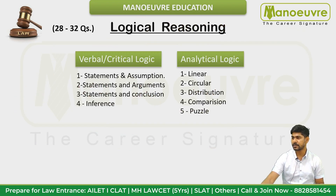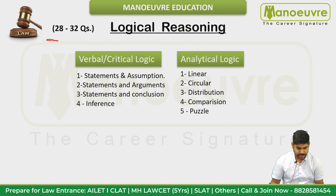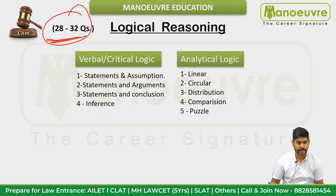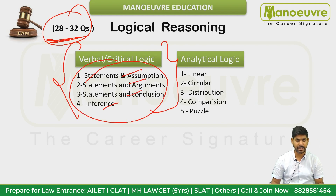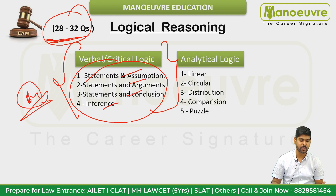Next is logical reasoning — this is a scoring section with 28 to 32 questions. Major chunks are critical reasoning and verbal reasoning: assumption, argument, conclusion, and inference. You will need to go through the set of books and practice those topics.